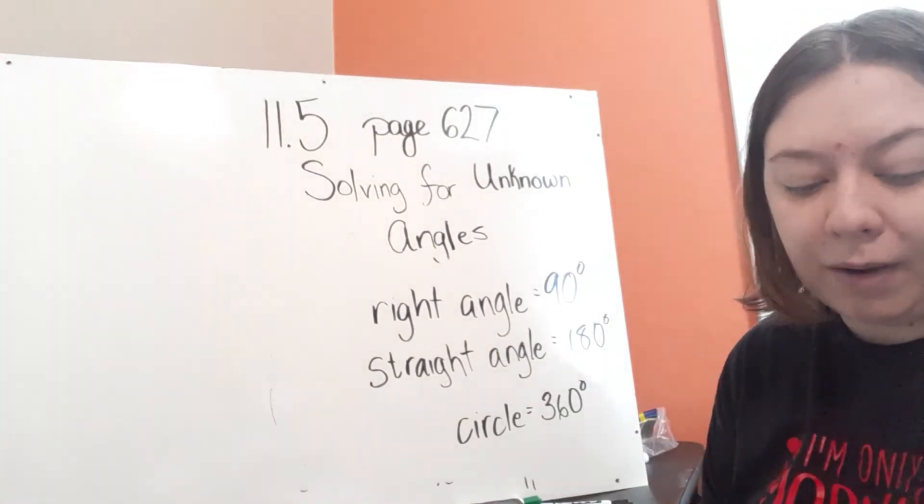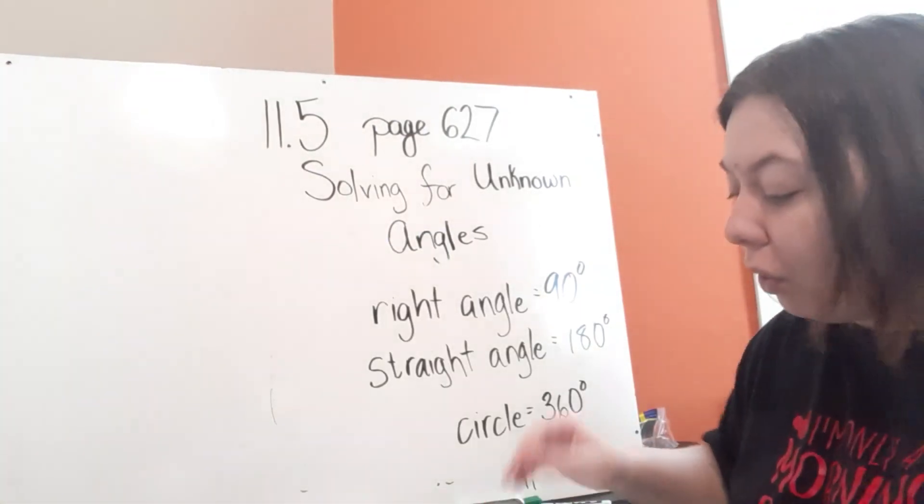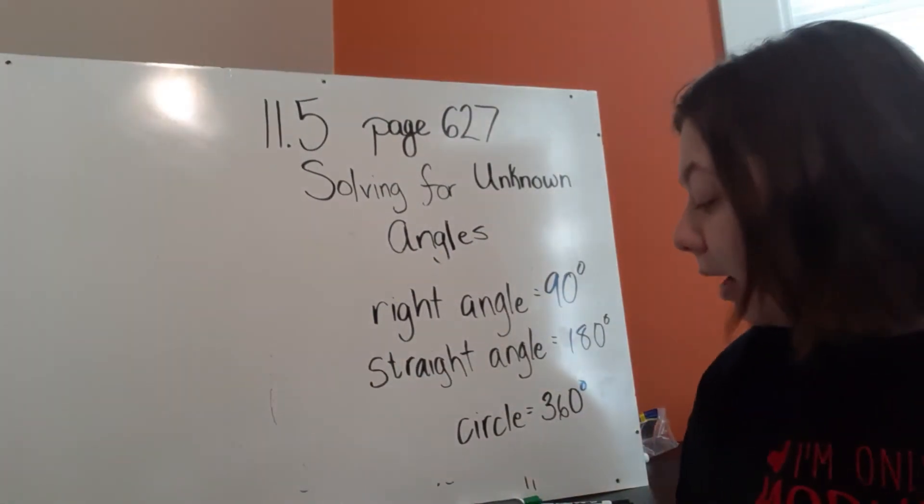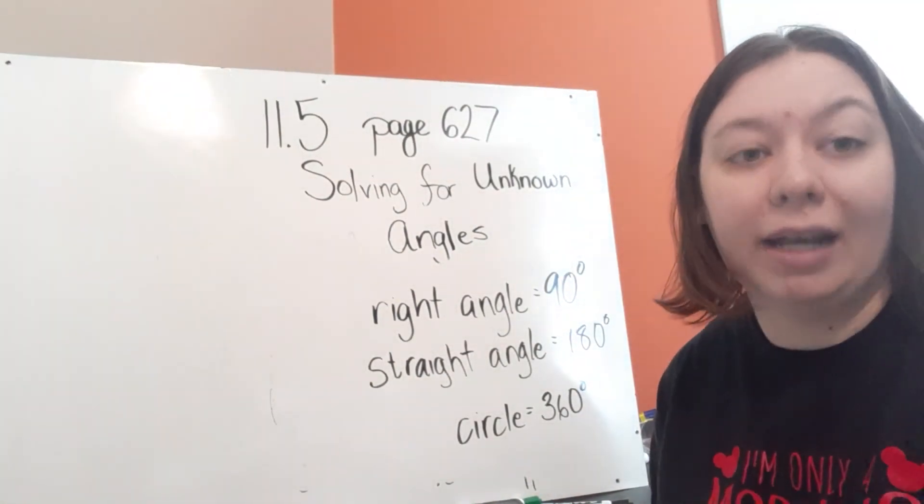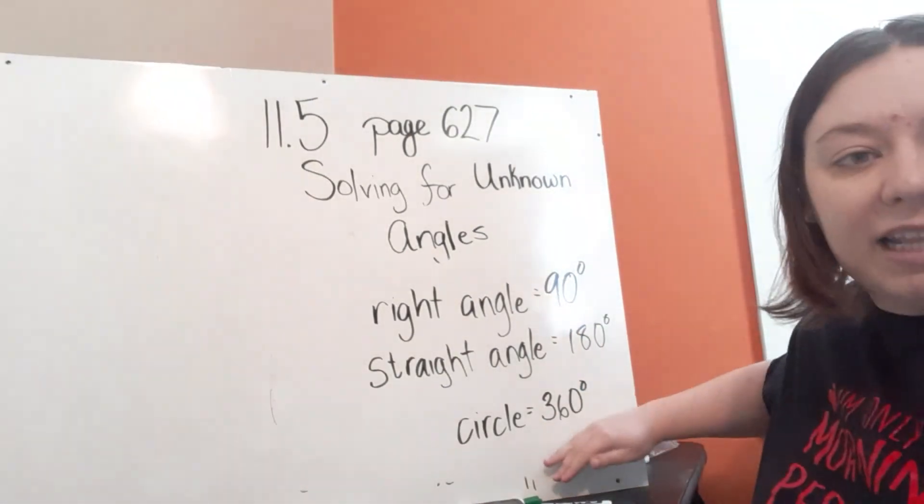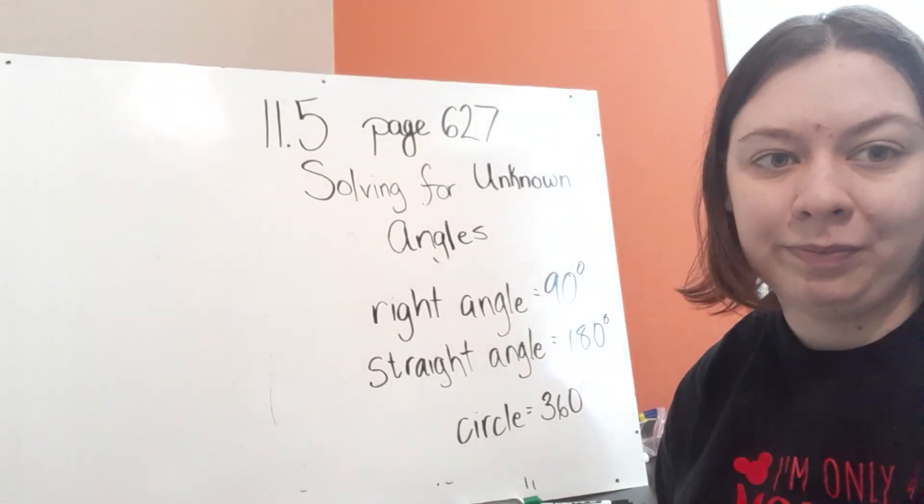Just remember, if they're already giving you the whole, you don't worry about this. For example, on number two on page 631, they're giving you the whole. So don't start plugging in this 360. Okay?